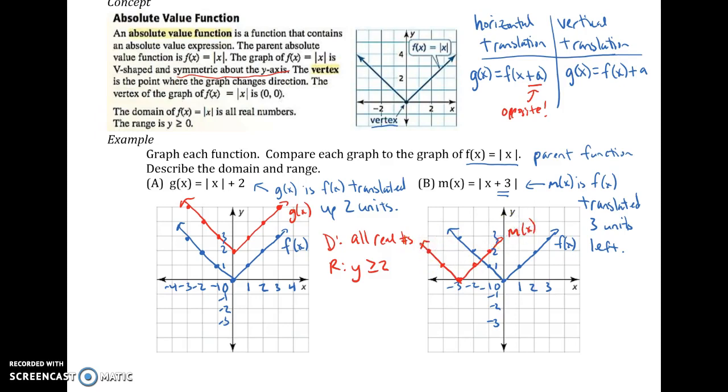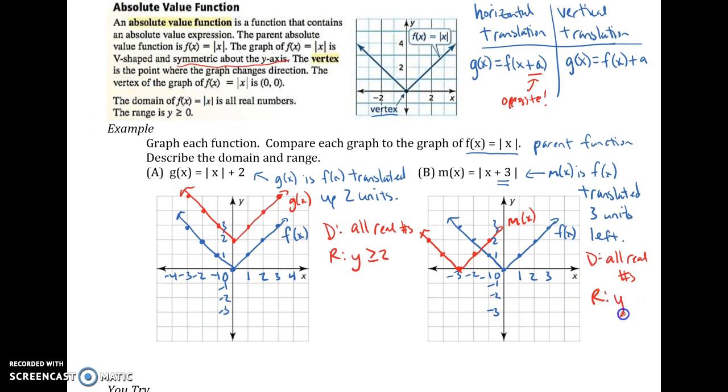So this in red is my m of x. And once again, let's do domain and range. So because we're still going to go on forever left and right, it's still all real numbers for domain. And then range, we didn't move up or down, so y is still stuck. The lowest point is 0. So that stays exactly the same as the parent.